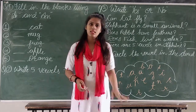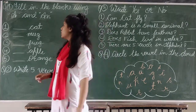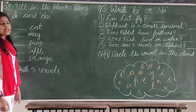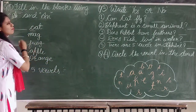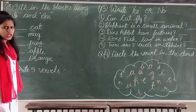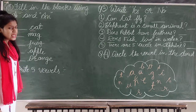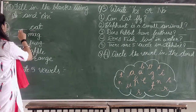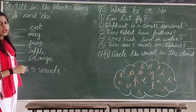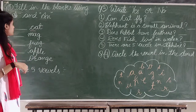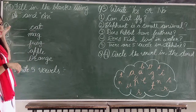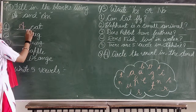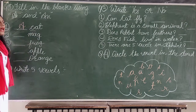Okay students, so come on, let's do it. Cat — C, A, T — cat. Is C a vowel? No. So what to use here — A or AN? Tell me. A. Very good. A cat.